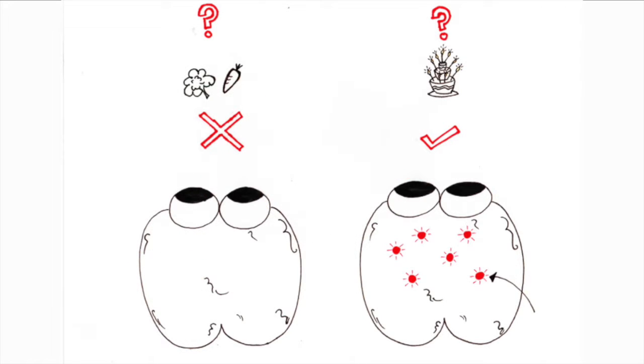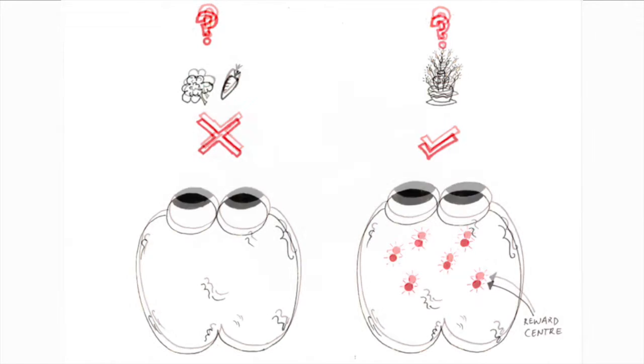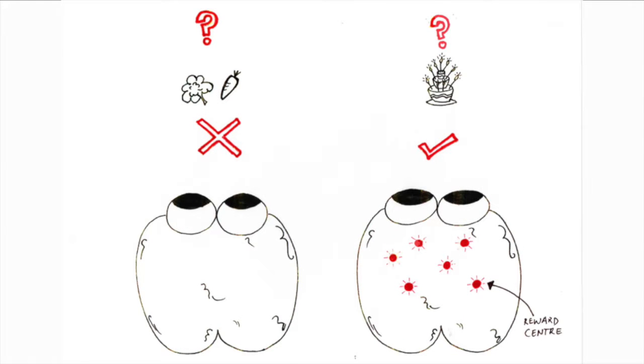When we're offered a choice of dessert between a piece of broccoli or a lovely piece of cake, most of us will select the second. Why do we behave like this when both of those foods may have similar nutrient value?